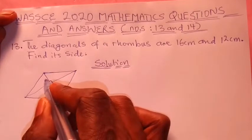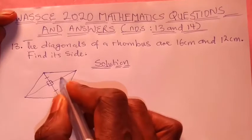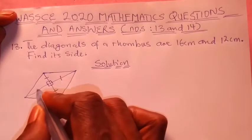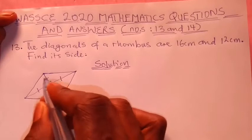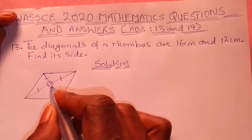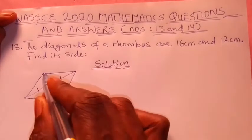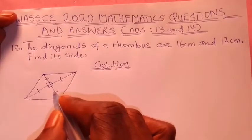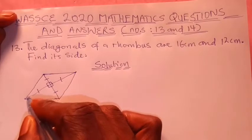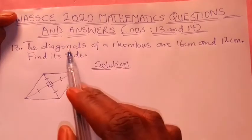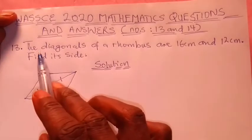Not only that, the diagonals bisect each other. Bisecting means they divide each other into equal parts. This particular line is broken into two equal halves — this is the first half, this is the second half. Now let's see how we apply what we have in the question to this diagram.